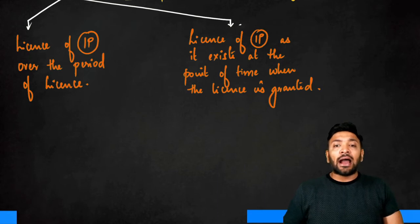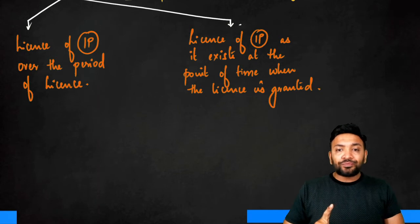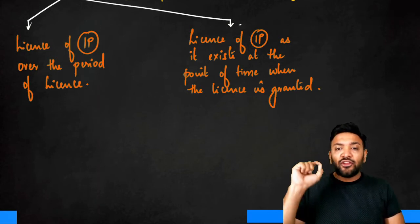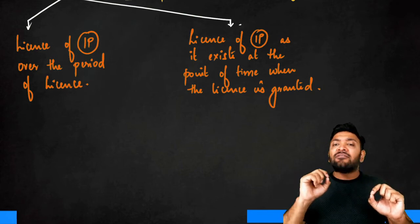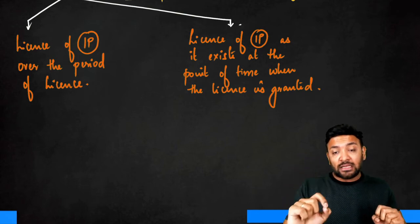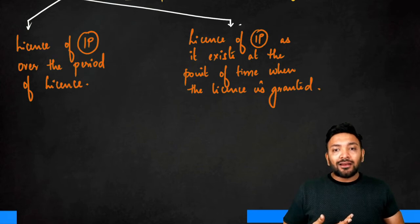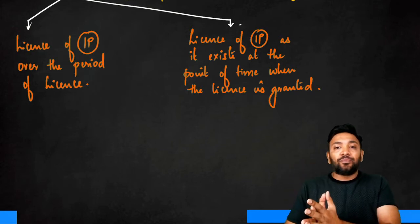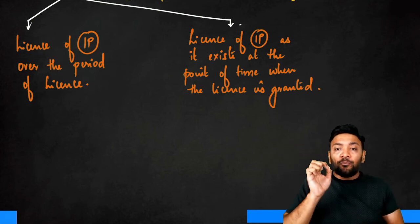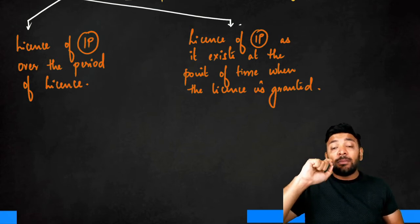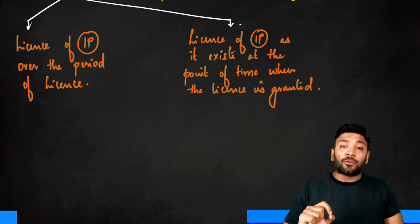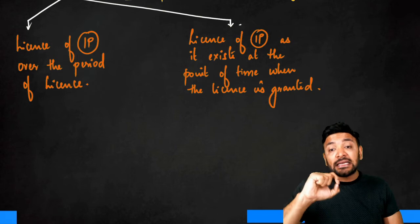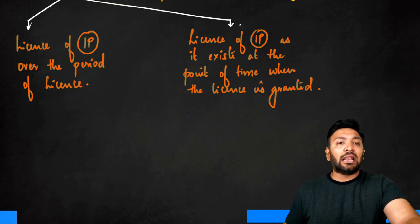Consider a pay-per-view movie. You go to a platform, pay 49 or 19 rupees, and you can watch that particular movie. If I've granted you a license to watch it for one year, will the movie change over that period? Absolutely not — the climax is not going to change. The content on the day you bought the license is the same content that will exist even at the end of the 12th month. That is the license of intellectual property as it exists at a point of time when the license is granted.